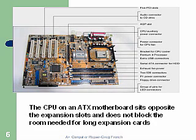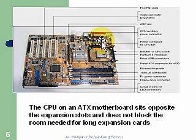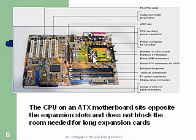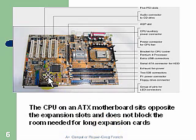Here's an example of the ATX motherboard. On the far side we have ports — a printer port, mouse and keyboard ports, and USB ports — which identify it as ATX. Up front are the memory slots, five PCI slots, an AGP slot for video, the processor socket, and the north bridge and south bridge chips. The CPU on the ATX motherboard sits opposite the expansion slots so it does not block room needed for a long expansion card.